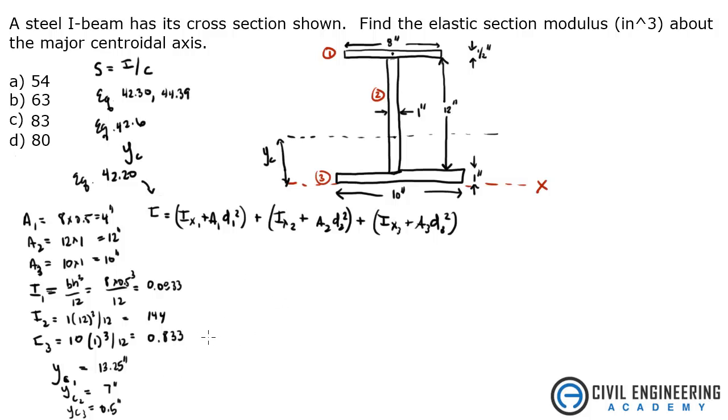Now we can solve for our Y, our centroid, which is, if you're following equation 42.6, states that we take area 1, multiply that by our YC1, so the centroid from our axis to that piece, which is 13.25, plus area 2 times Y2, which is 7, plus area 3 times Y3, all over all the areas, sum of all the areas. So that's 4 plus 12 plus 10. So the centroid of this whole thing is going to be 5.46 inches.